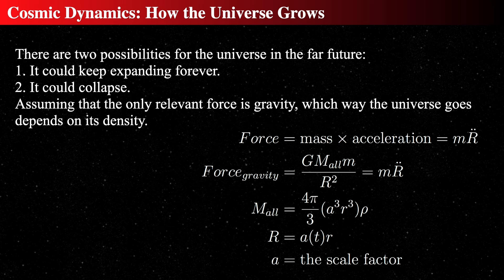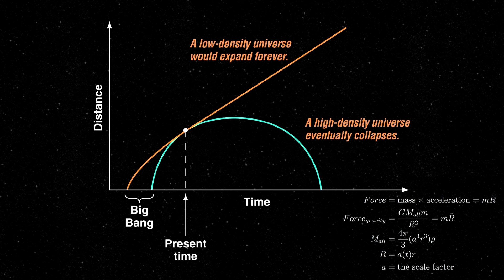There are really only two ways it can go: either the universe expands forever, or it collapses eventually. There's also a limiting value between them where it just barely expands forever but if it had a little less it would collapse. It would collapse if there's a lot of mass pulling it back together; if the mass is small and the density is small, the expansion is not overcome.